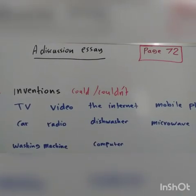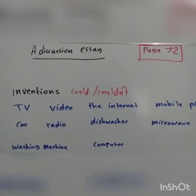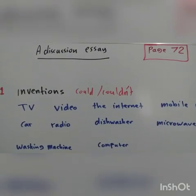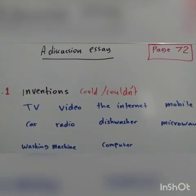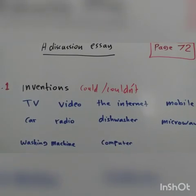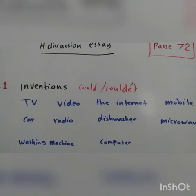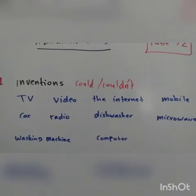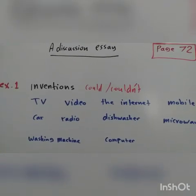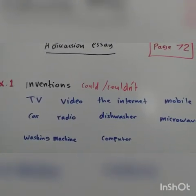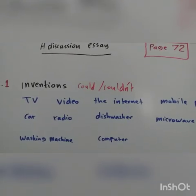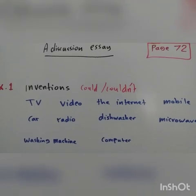Hello, and welcome to the lesson. Today's lesson is on page 72 of the student's book: a discussion essay. In discussion essays, you present two sides of an argument. It should outline reasons for and against a particular issue. We call the reasons for 'advantages' and the reasons against 'disadvantages.'